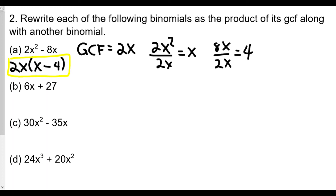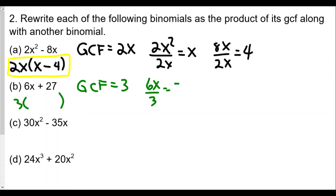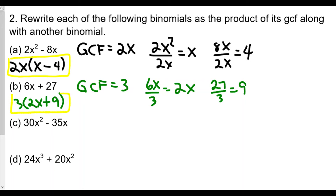For part (b), the GCF of 6 and 27 is 3. Dividing: 6x ÷ 3 = 2x, and 27 ÷ 3 = 9. So the answer for (b) is 3(2x + 9).